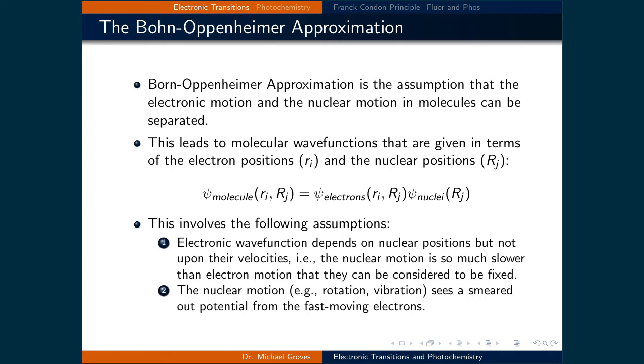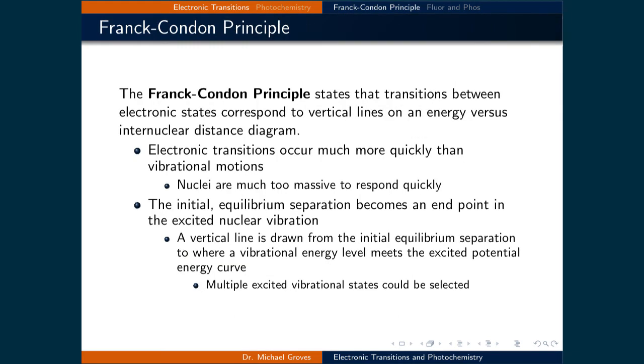The Franck-Condon principle states that transitions between electronic states correspond to vertical lines on an energy-versus-internuclear distance diagram. The Born-Oppenheimer approximation lets us assume that electronic transitions occur much more quickly than vibrational motions, because nuclei are much too massive to respond quickly. So when the electronic transition occurs, the equilibrium separation of the nuclei becomes the end-point separation in the excited nuclear vibration. This looks like a vertical line drawn from the initial equilibrium separation to where a vibrational energy level meets the excited potential energy curve.